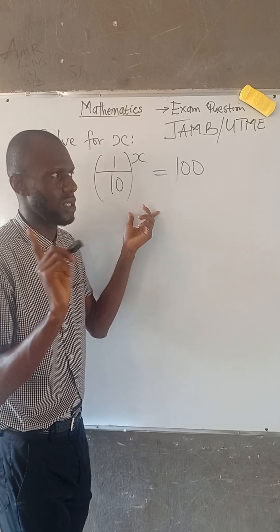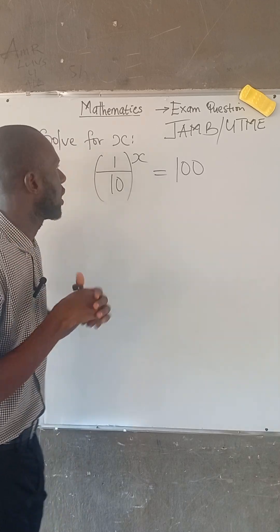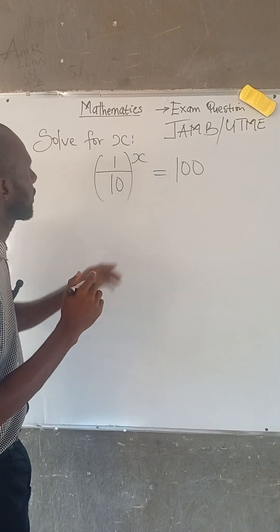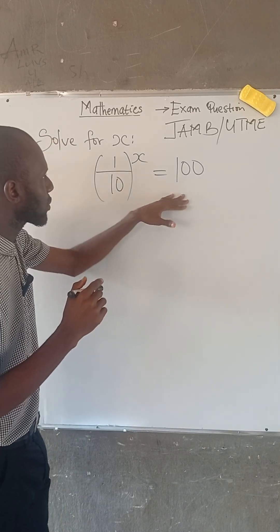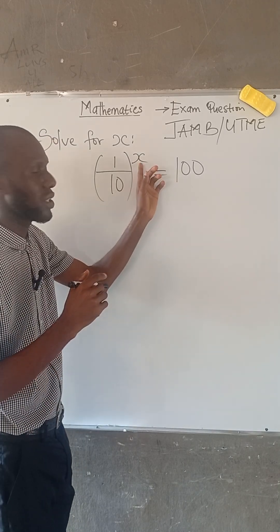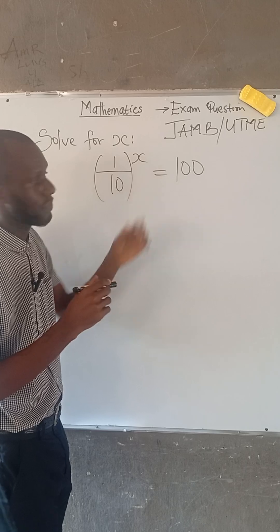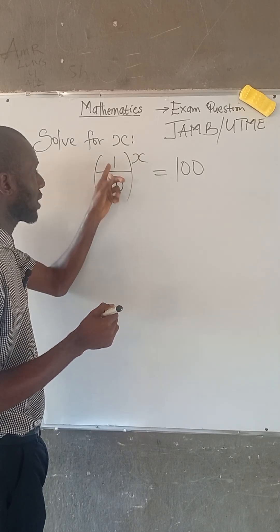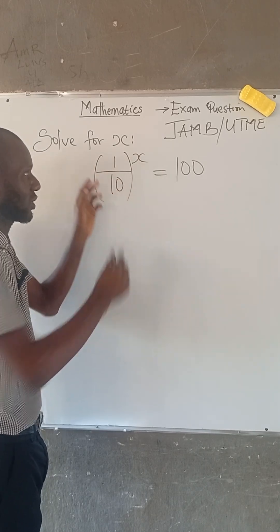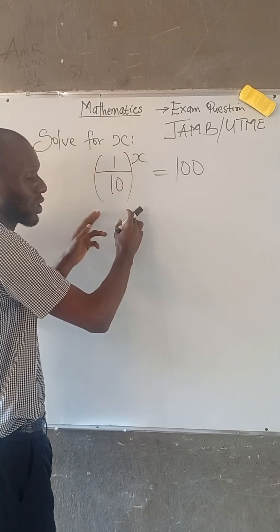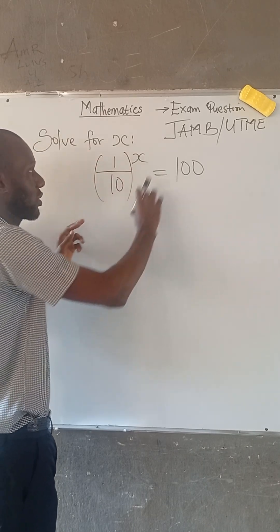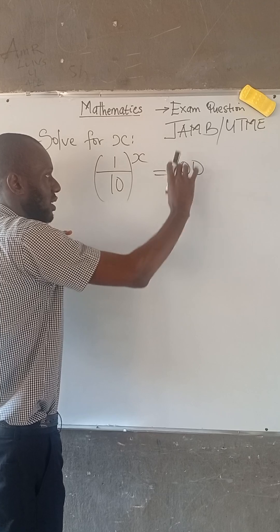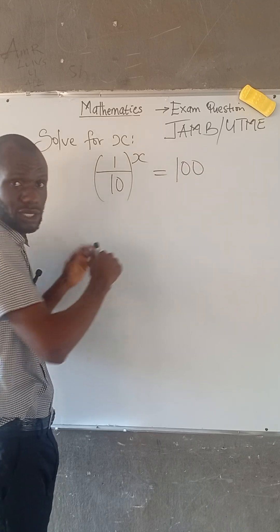I'm sure you don't do a JAM practice. So therefore, we are asked to find the value of x. We are given 1 divided by 10, all enclosed in a bracket, to the power of x, equal to 100.